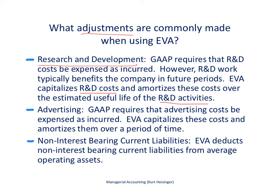Another adjustment that's often made has to do with advertising. Again, GAAP requires that all advertising costs be expensed as incurred, but many companies feel that advertising costs and promotional materials benefit those companies for future periods. Therefore, EVA allows for the capitalization of these costs — recording them as an asset and then amortizing them over a period of time.